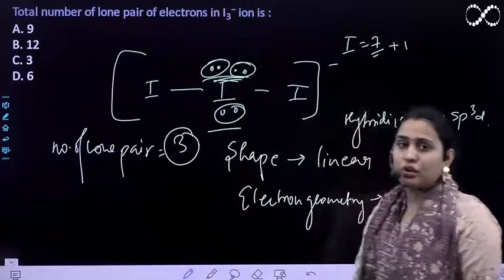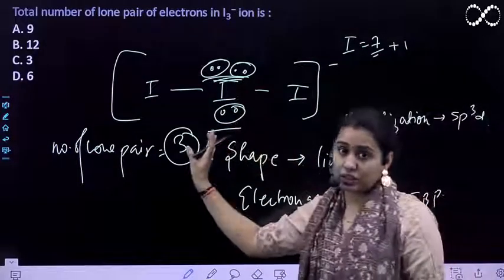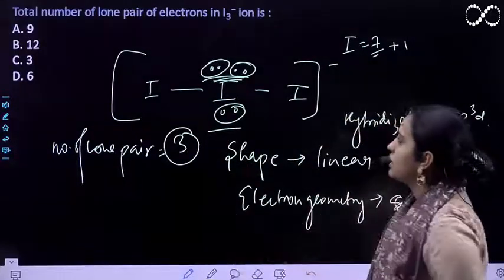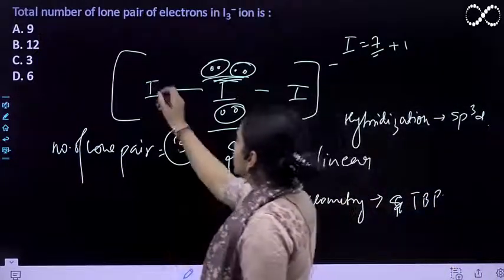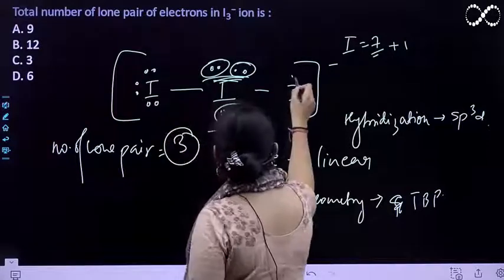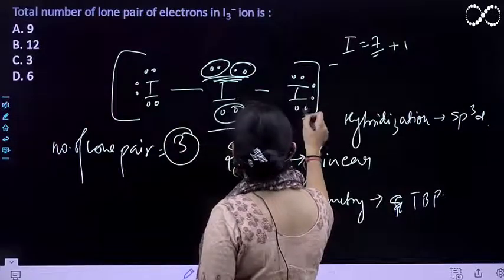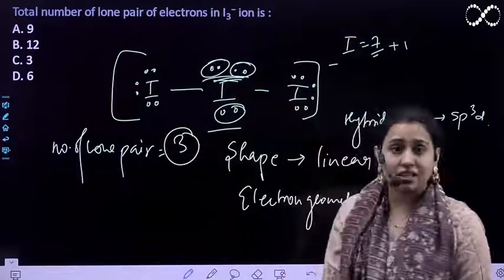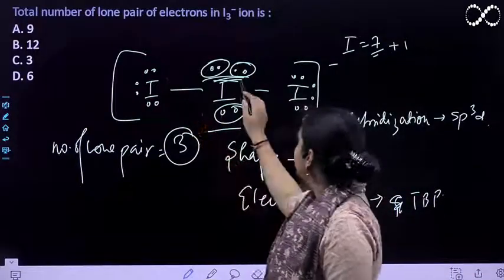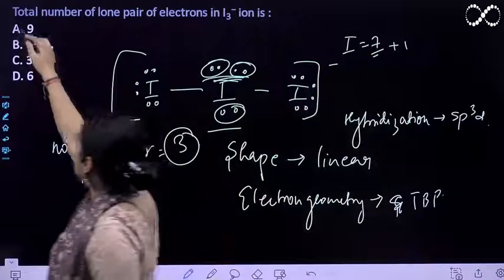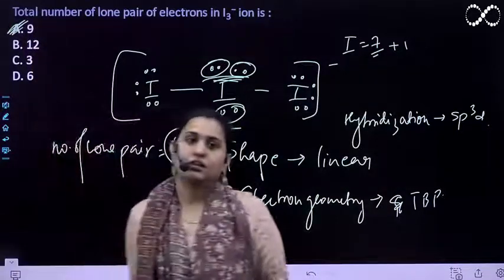So total number of three is on this iodine. But basically the question is asking the total number of lone pairs of electrons. So if you're calculating total number, then three on this iodine and three on this iodine. The question is not asking about the central atom, it is saying the total number. So three here, three here, three here. Therefore, the total number of lone pairs is nine.